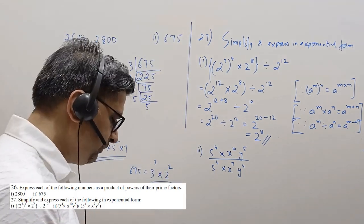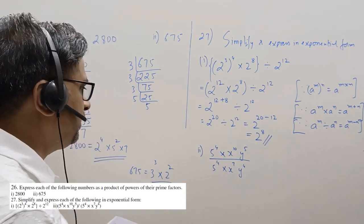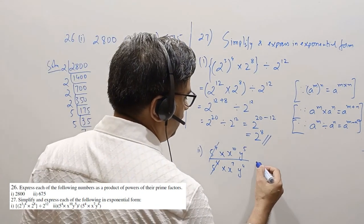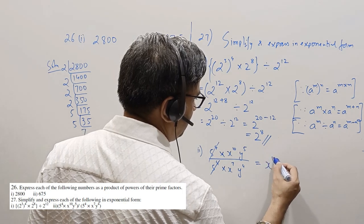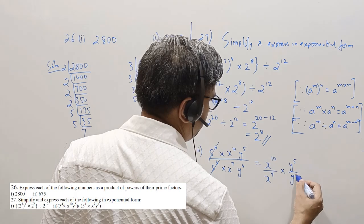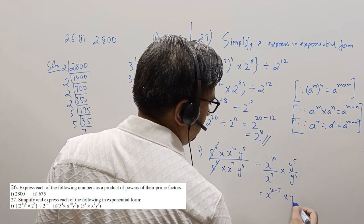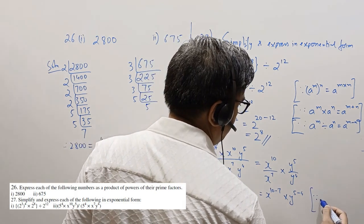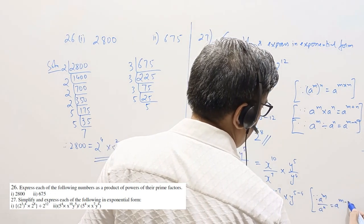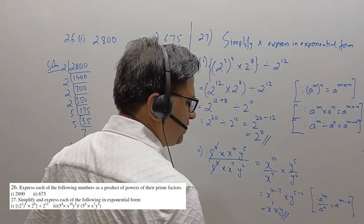For the second part, 5 to the power 4 in numerator and denominator will readily cancel each other out. We are left with x to the power 10 by x to the power 7 into y to the power 5 by y to the power 4. This comes to x to the power 10 minus 7 into y to the power 5 minus 4, using the law a^m divided by a^n equals a^(m-n). The answer is x to the power 3 into y.